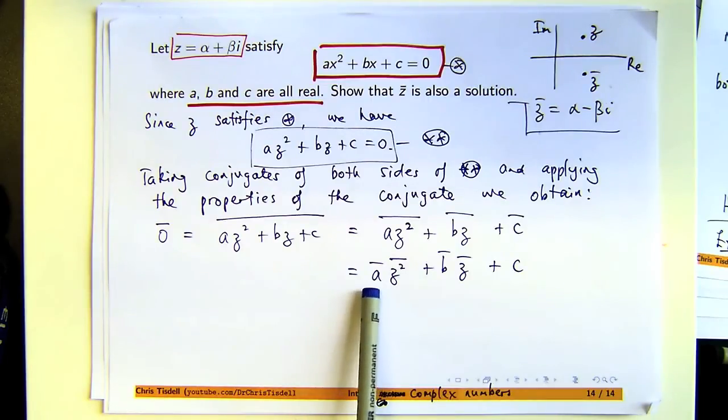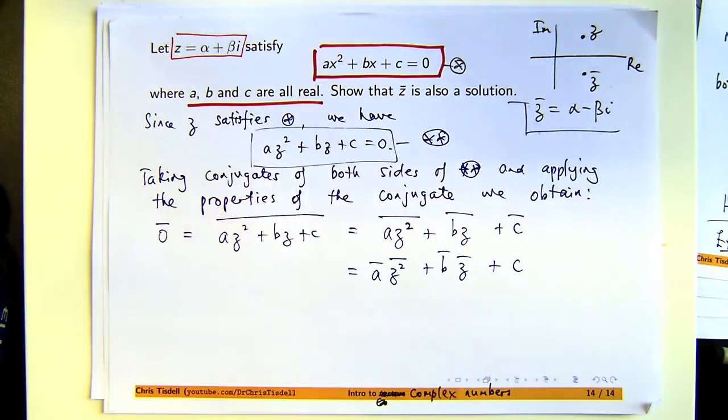Again, a bar and b bar are going to be a and b, because a and b are both real. And the only thing I've got to worry about now is this conjugate of a power, conjugate of z squared. The conjugate laws tell us that this is the square of the conjugate. The conjugate of the square is the square of the conjugate.